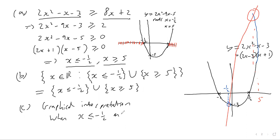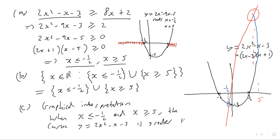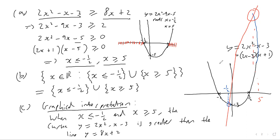So the graphical interpretation is: when x is less than or equal to negative one half, and when x is greater than or equal to 5, the curve y equals 2x squared minus x minus 3 is greater than the line y equals 8x plus 2. That's our graphical interpretation — we've solved the inequality, given the set notation answer, and provided the graphical interpretation.